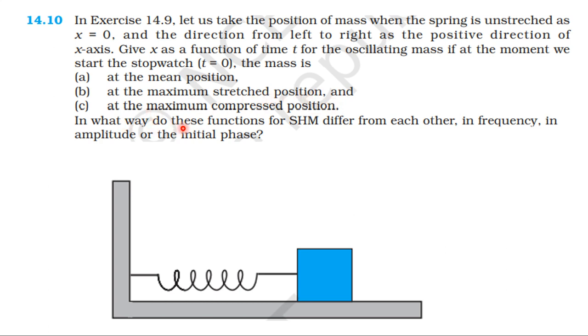In what way do the functions for simple harmonic motion differ from each other — in frequency, in amplitude, or in the initial phase — in the diagram?